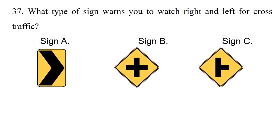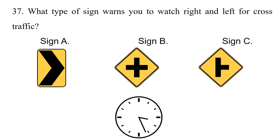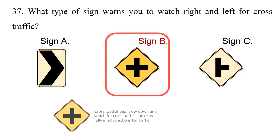Question: What type of sign warns you to watch right and left for cross traffic? Option 1: Sign A. Option 2: Sign B. Option 3: Sign C. The answer is option 2: Sign B — crossroad ahead. Slow down and watch for cross traffic. Look carefully in all directions for traffic.